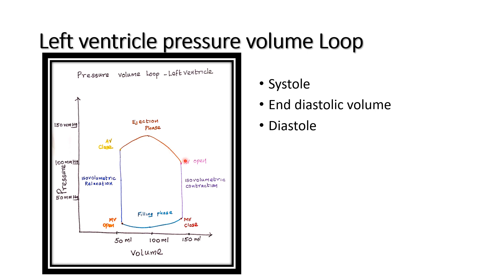Pressure continuously increases during the rapid ejection phase, and during the reduced ejection phase pressure gradually decreases. At this point the end of systole is reached, the aortic valve is closed, and the end-systolic volume is around 60 ml. Diastole starts from this point.